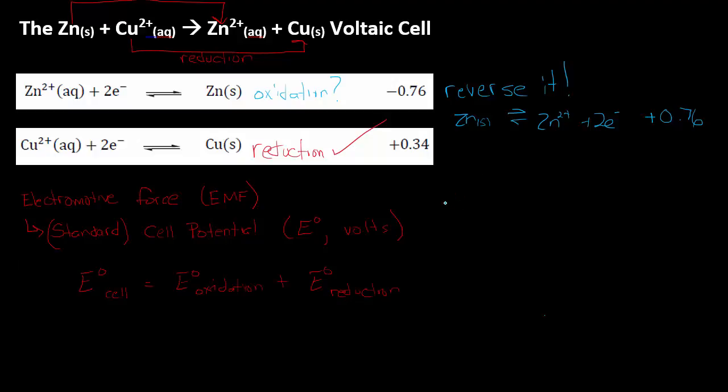When you reverse the equilibrium reaction, you change the sign. So we go from negative 0.76 to positive 0.76, and we can see that this cell should generate a cell potential of 1.10 volts. Remember also that the term standard means one molar solutions at 298 kelvin.